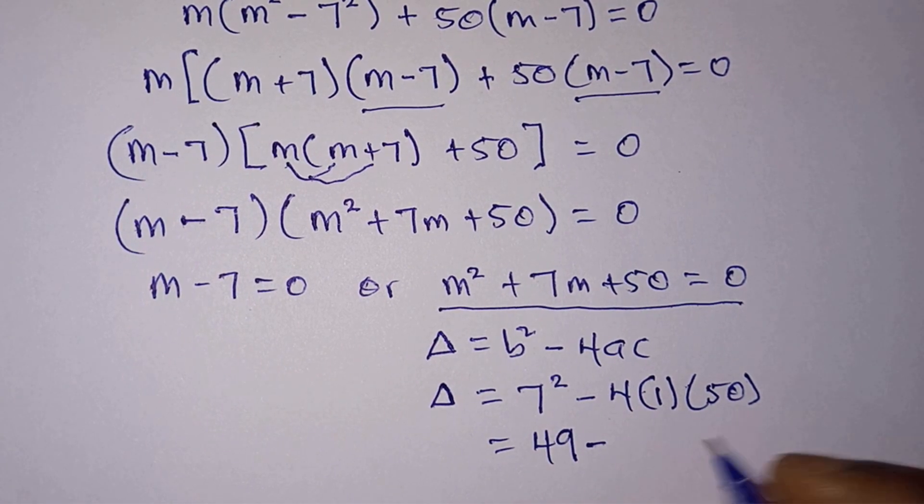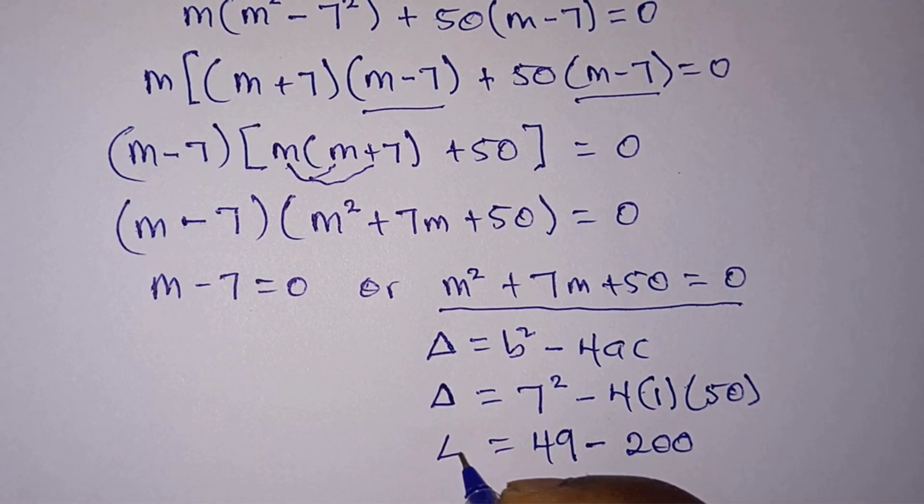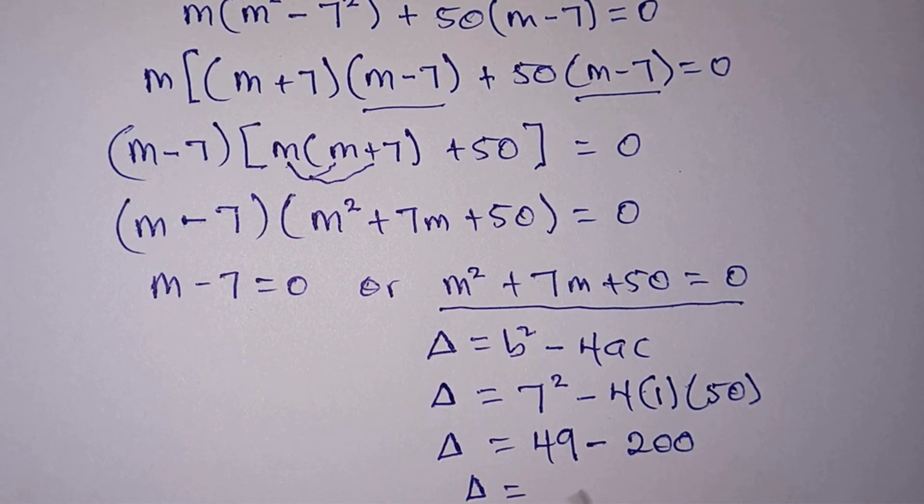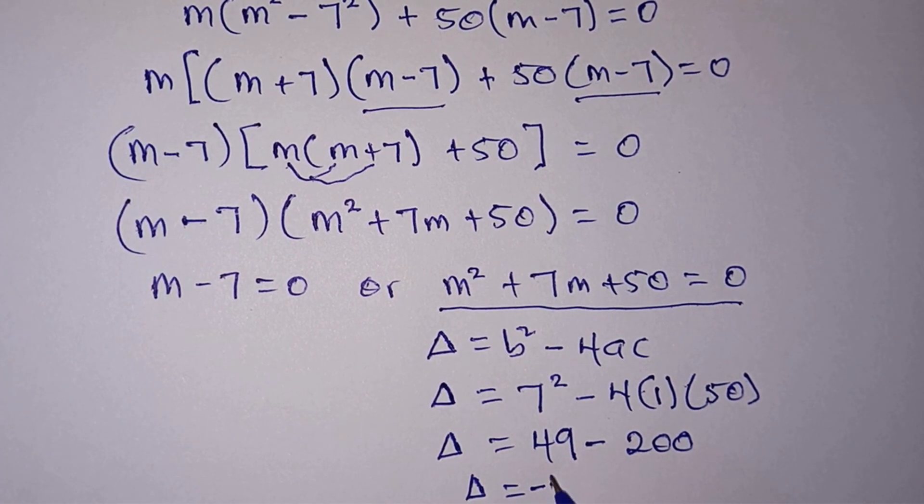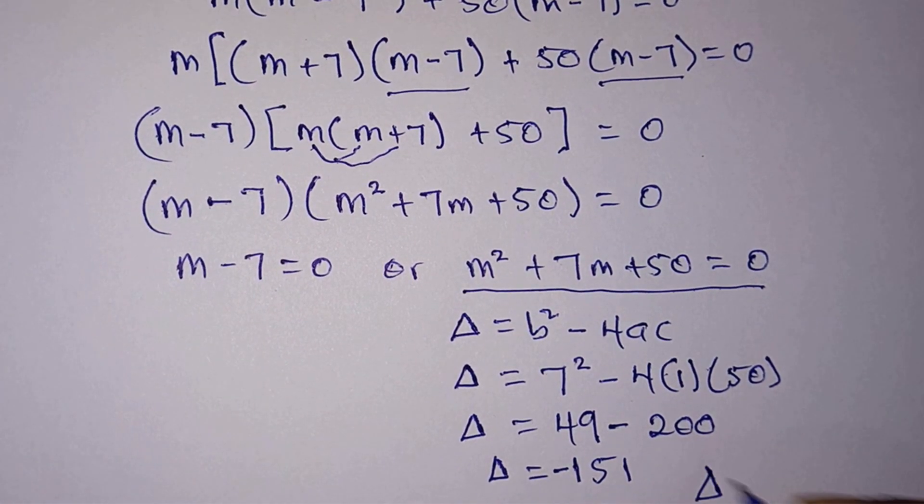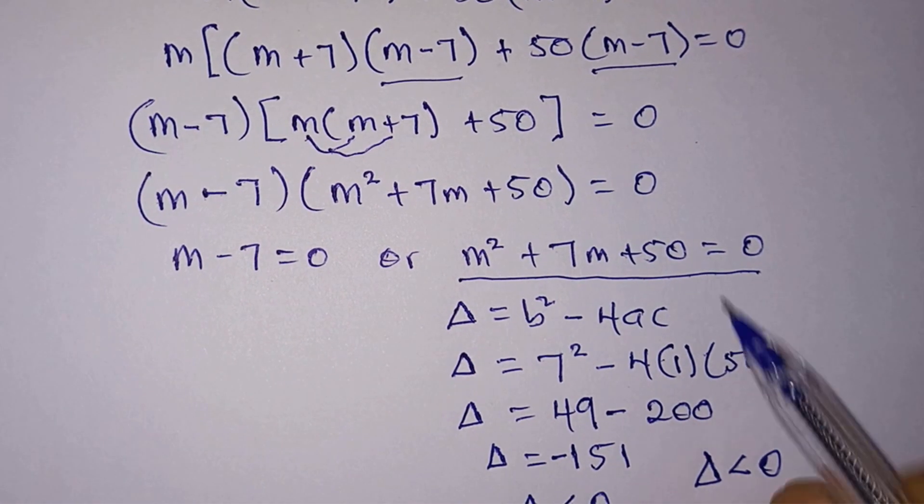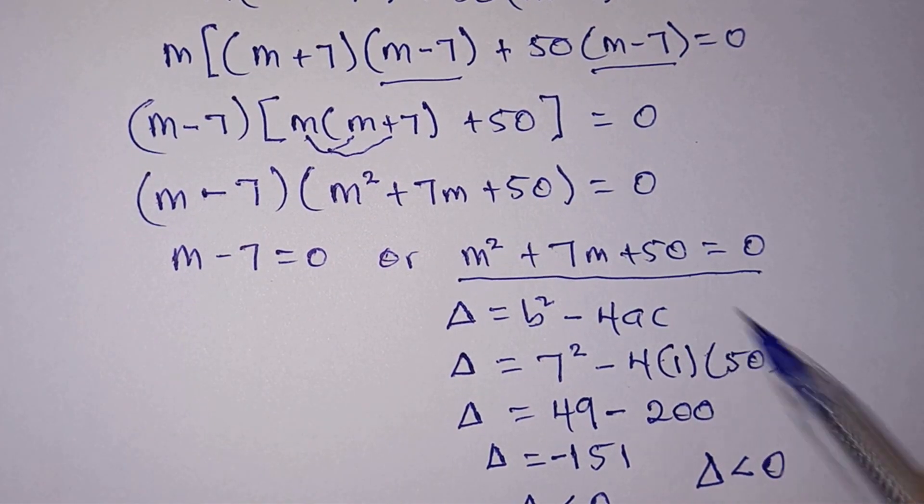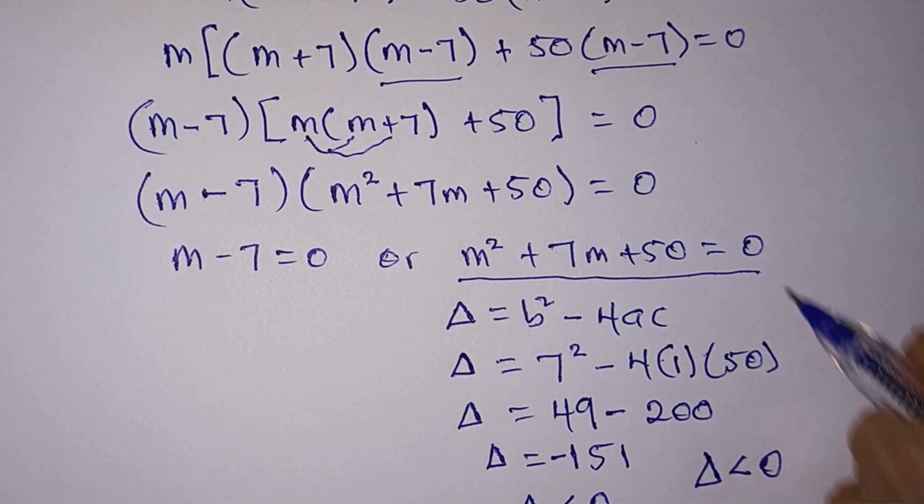7 squared is 49 minus 4 times 50, that is 200, so we have delta equal to negative 151. Since delta is less than 0, it means that this quadratic equation over here has no real solution. Therefore, we are not going to consider this equation.